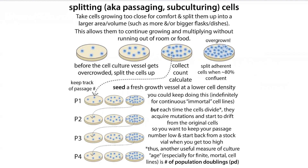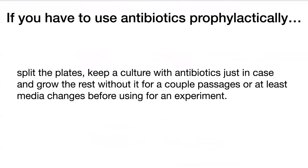When you do this, you can passage so that you have two growths going in parallel — one with the antibiotic and one without. This way, if there's some contamination, you'll be able to see it in the plates without antibiotics but not the plate with antibiotics. That tells you there might be low-level contamination in your antibiotic-containing plates as well. You can also keep those cultures with antibiotics as a safety net if something happens to your plates without antibiotics.